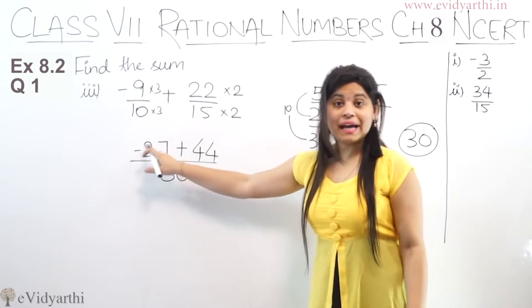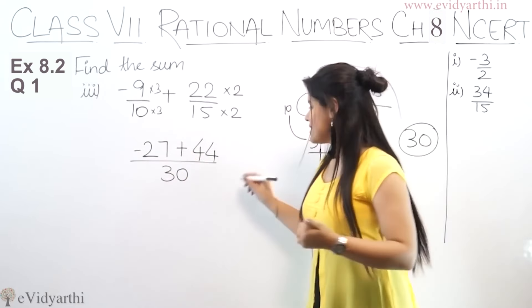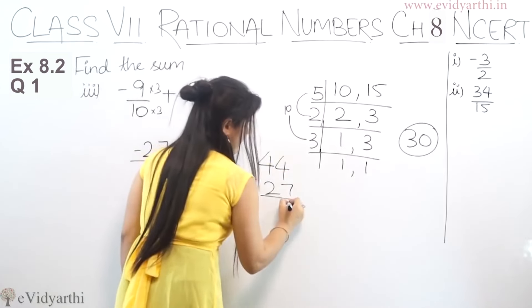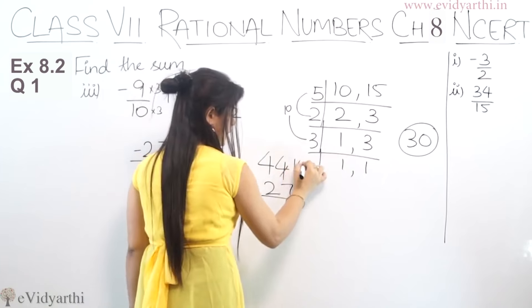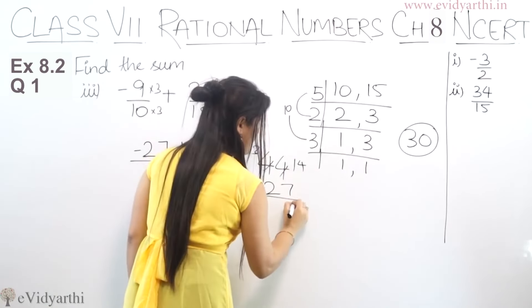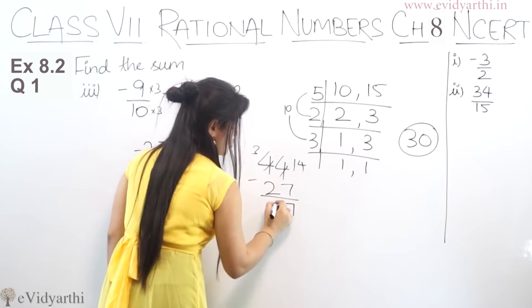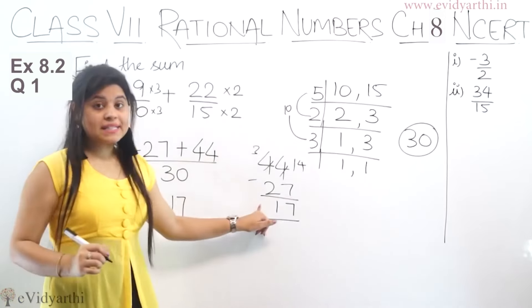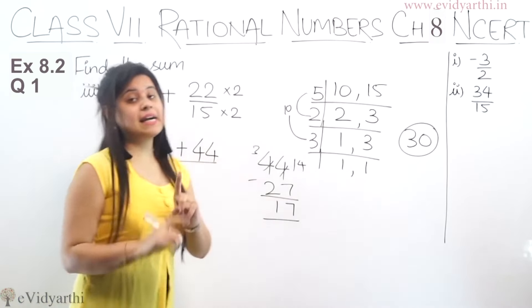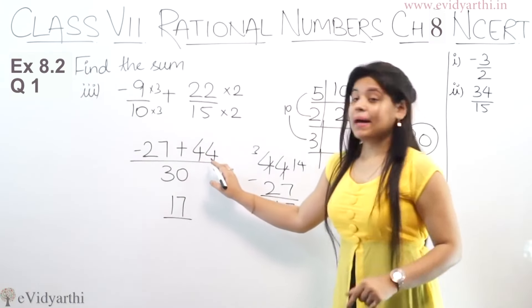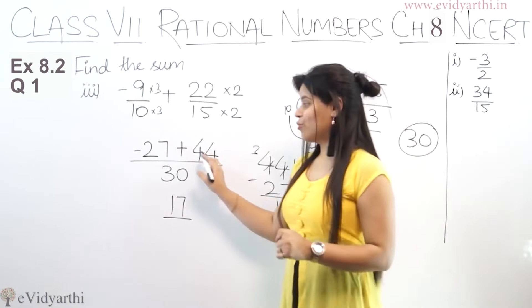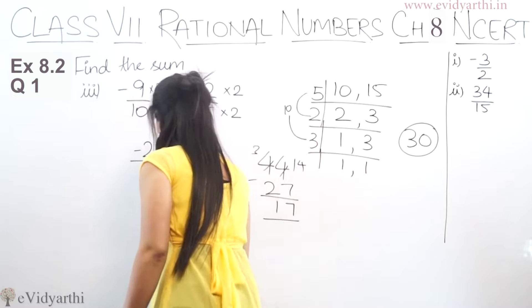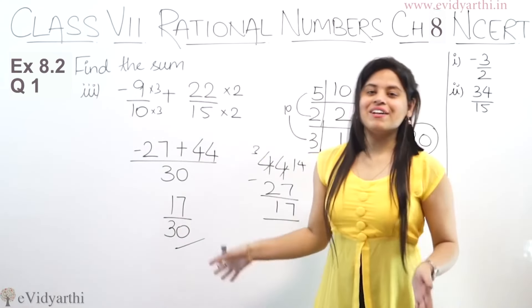We have minus 27 plus 44. One is minus and one is plus, so we subtract: 44 minus 27. Working it out: 4 minus 7 becomes 14 carry 1, and 3 minus 2 minus 1 is 0, wait — 14 minus 7 is 7 and 3 minus 2 is 1, giving 17. The sign stays positive because the bigger number is 44 and it has a plus sign. So we get 17 upon 30. The answer is 17 upon 30.